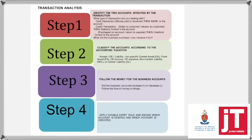Just to recap or refresh our memories, if we think about transaction analysis, we have four steps. Step one is to identify the two accounts affected by the transaction. You have to ask yourself: what type of transaction is this — a cash or a credit transaction — and then what did we purchase or pay for? Did we receive money from debtors? Was it rent income? Or did we pay for stationery, etc.